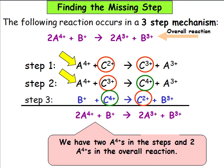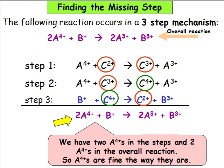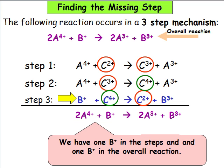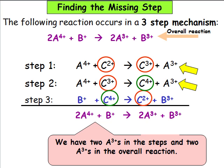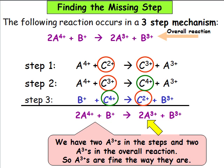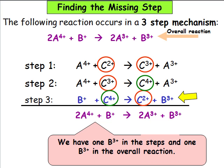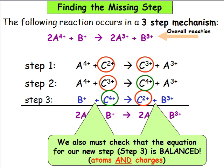We have two A4+ in the steps and two A4+ in the overall reaction, so A4+ are fine. We have one B+ in the steps and one B+ in the overall reaction, so B+ are also fine. We have two A3+ in the steps and two A3+ in the overall reaction, so A3+ are fine. We have one B3+ in the steps and one B3+ in the overall reaction — so all the remaining species add up to the overall reaction. We must also check that the equation for step 3 is balanced; atoms and charges should both be balanced.